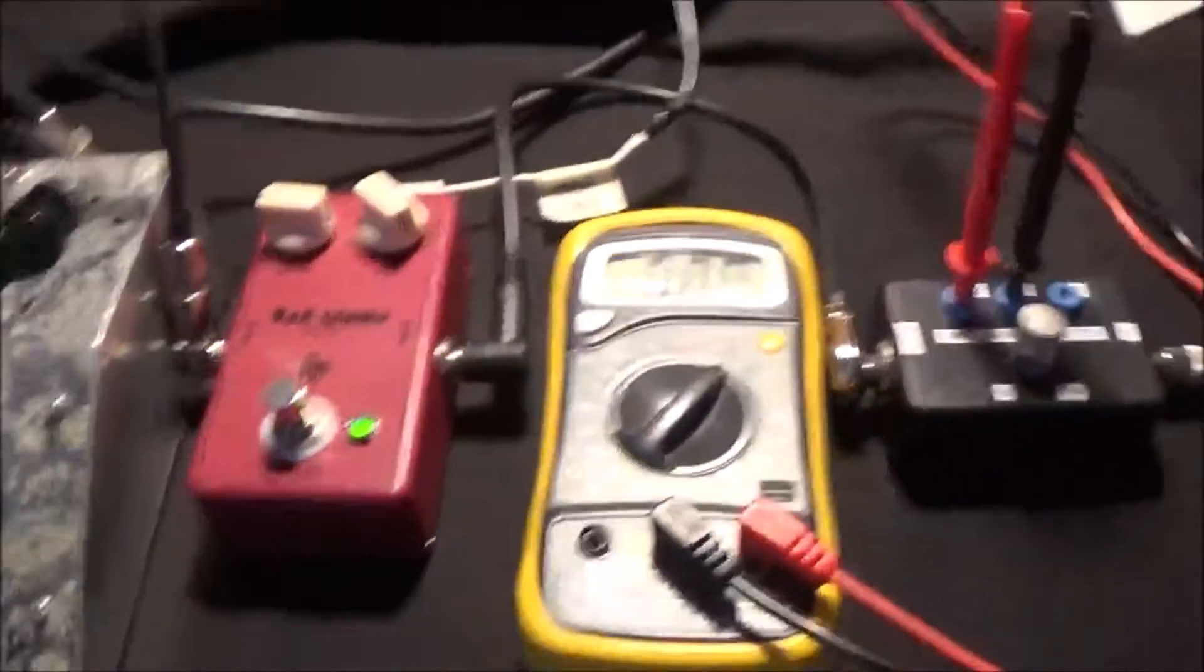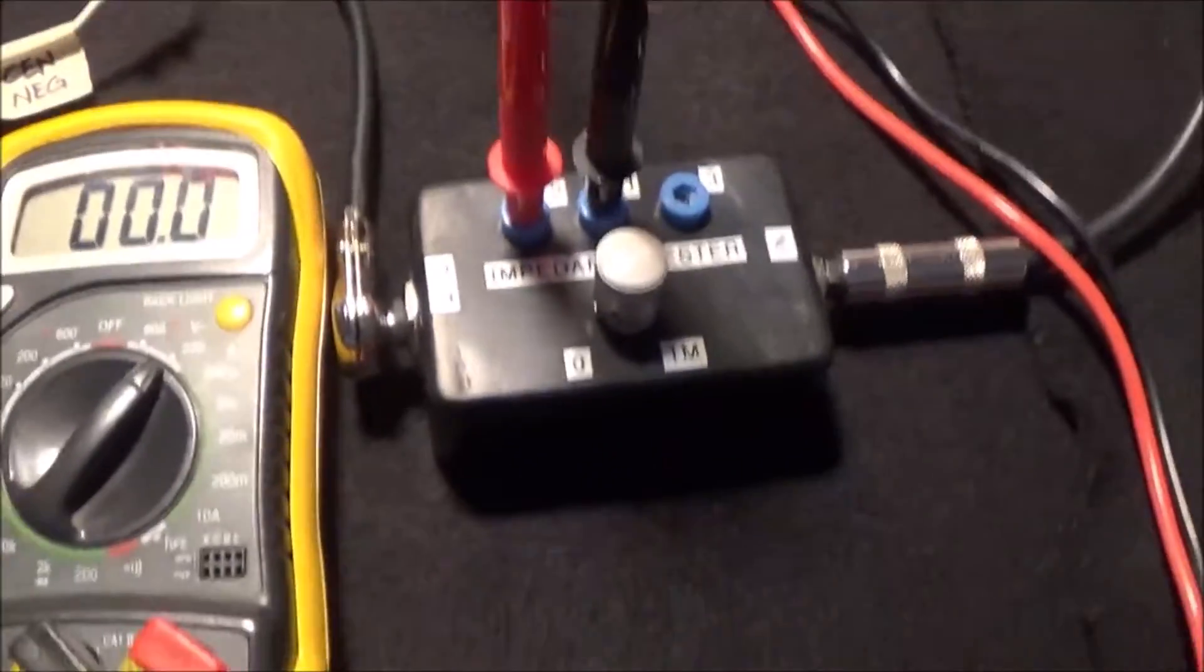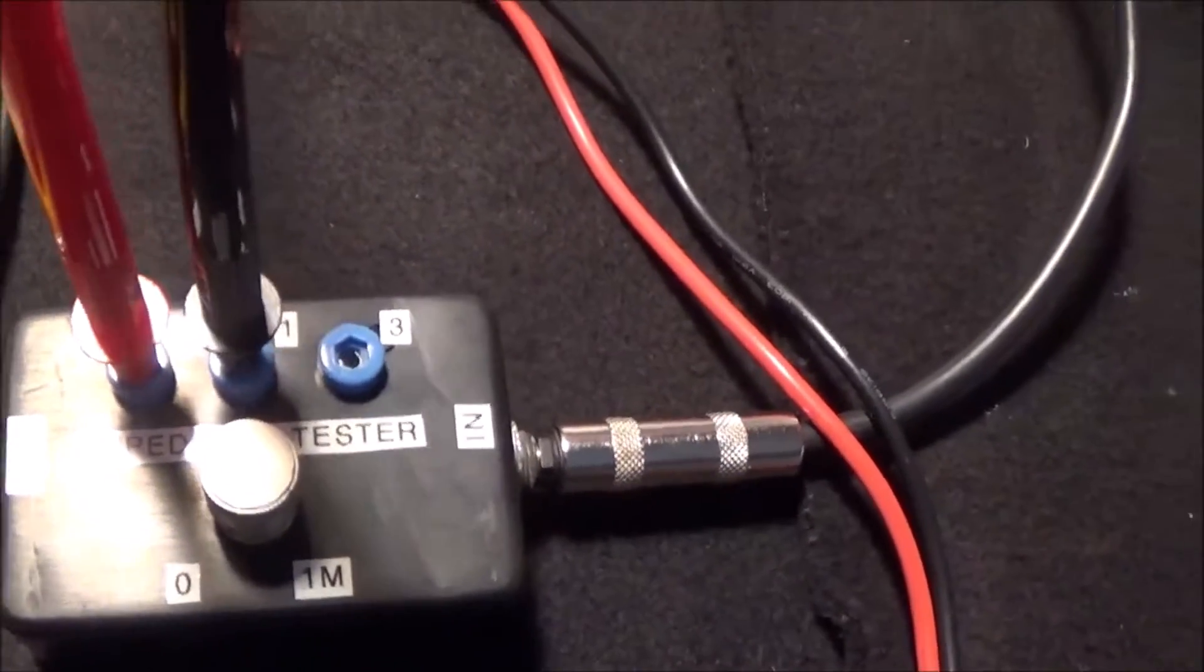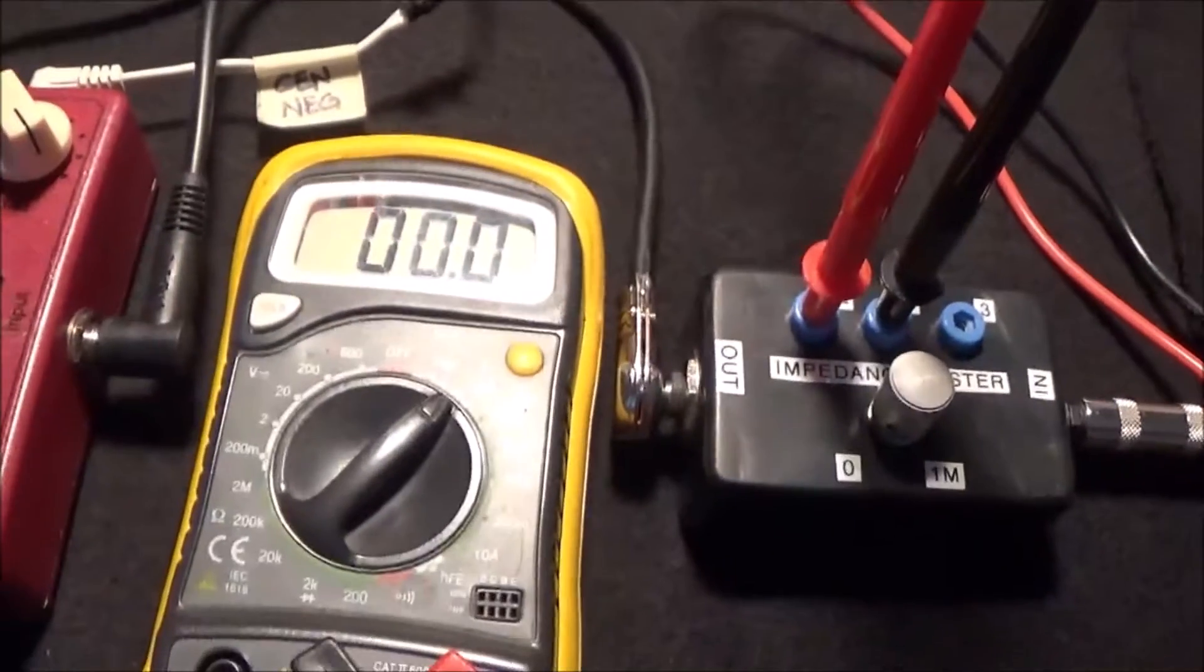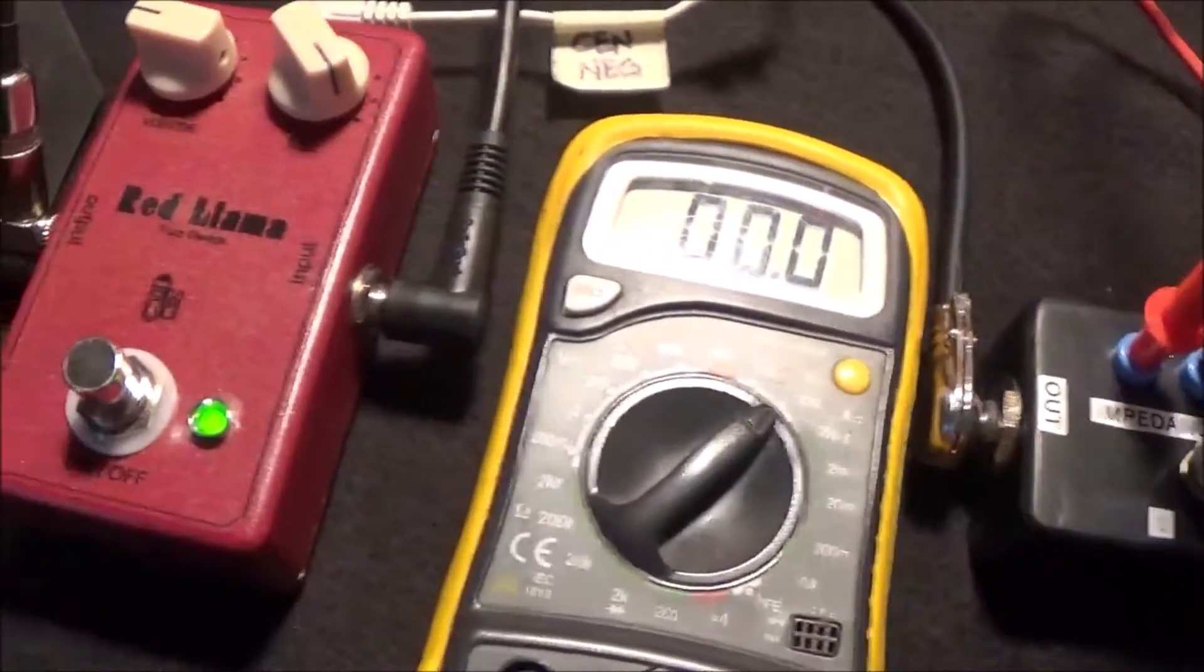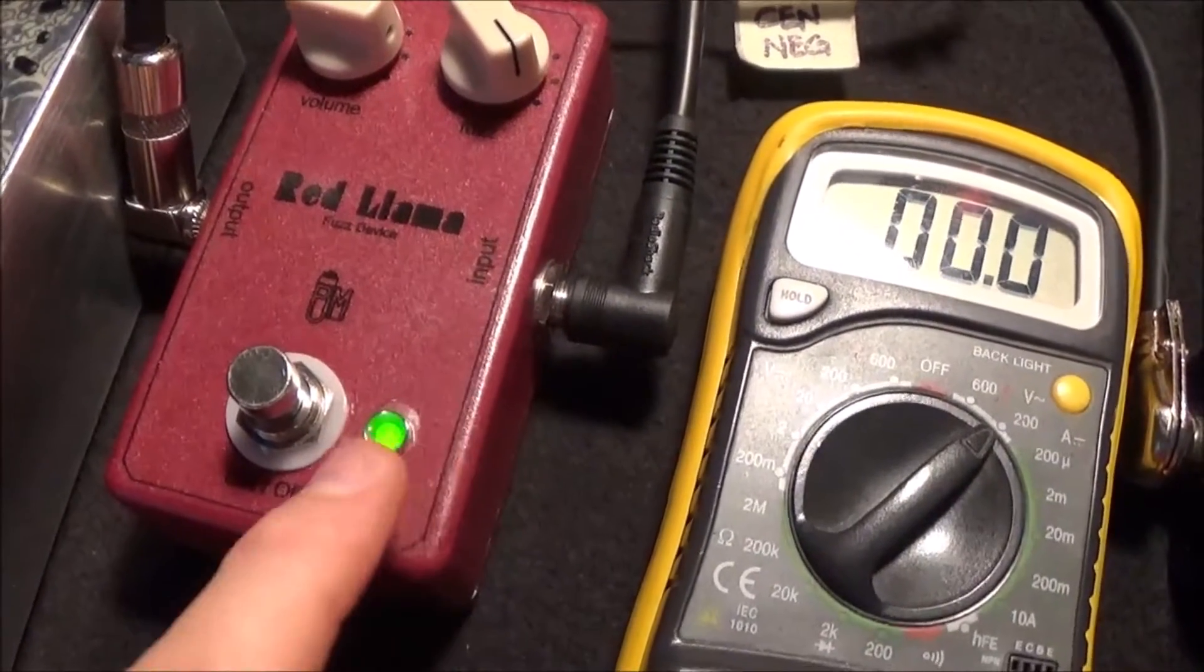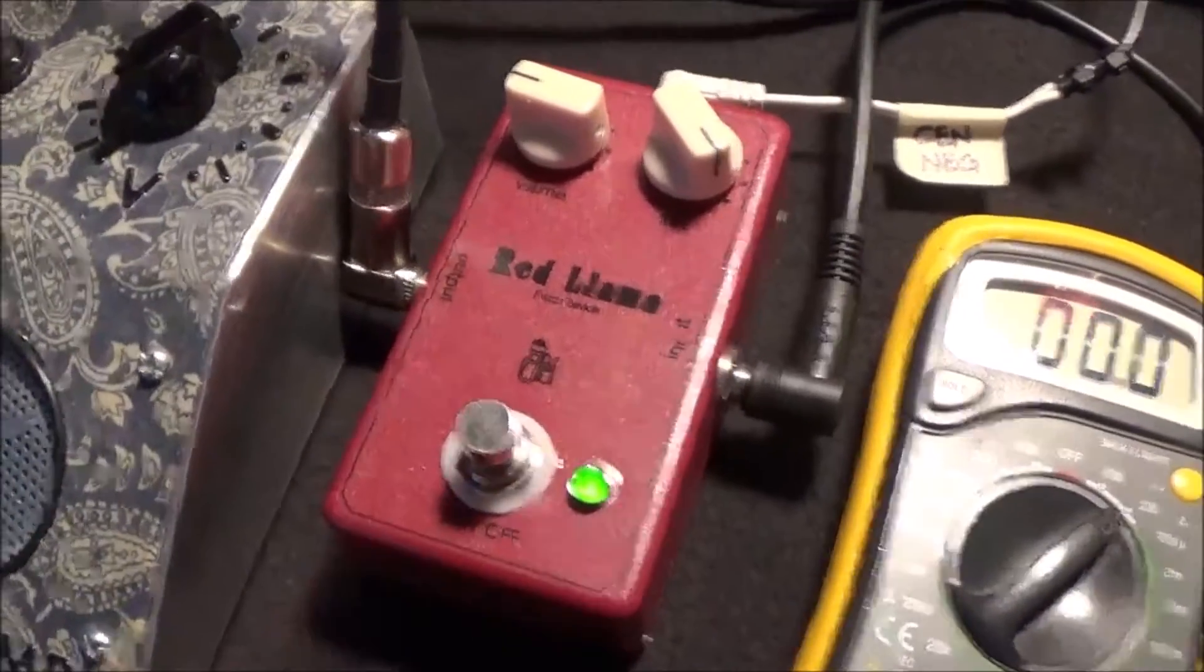Then you unplug your probes and measure the resistance between points one and three, and that will be approximately your input resistance. I have the multimeter probes into test points one and two, set to AC. I'm going to test the input impedance of this Red Llama clone that I built a number of years ago.